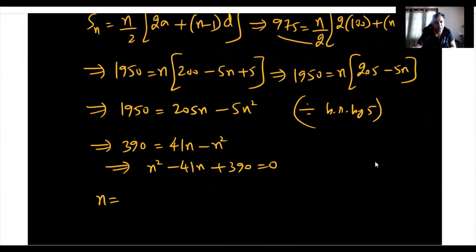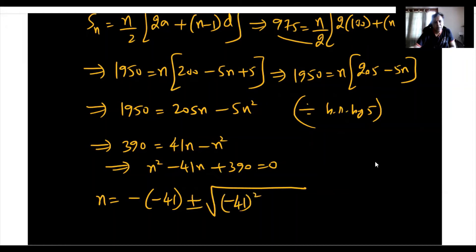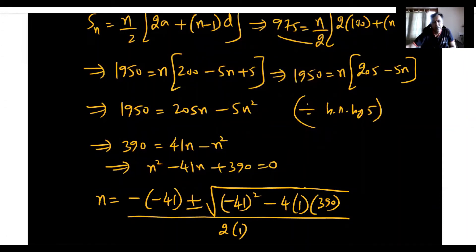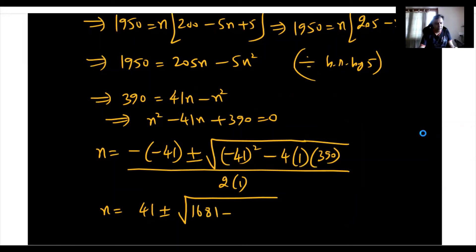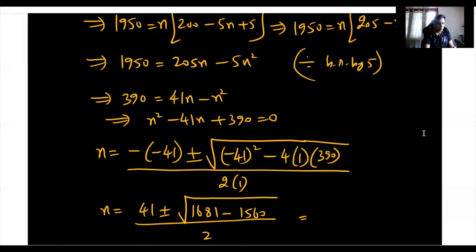Using the quadratic formula: n equals minus b, which is minus 41, plus or minus square root of b squared minus 4ac, divided by 2. Simplifying further: n equals 41 plus or minus square root of 1681 minus 1560, divided by 2, which gives square root of 121, that is 11.